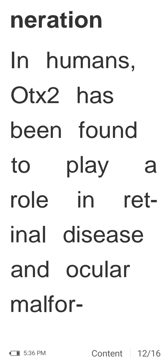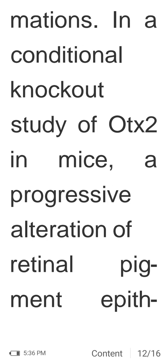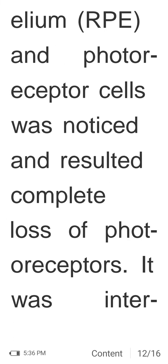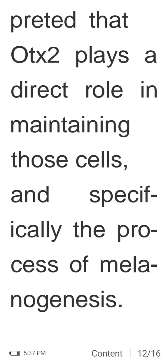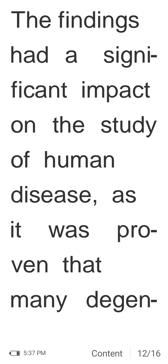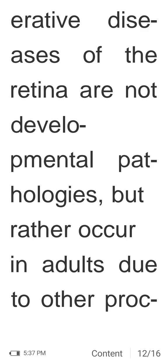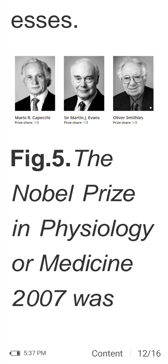OTX2 has been found to play a role in retinal diseases and ocular malformations. In a conditional knockout study of OTX2 in mice, a progressive alteration of retinal pigment epithelium (RPE) and photoreceptor cells was noticed, resulting in complete loss of photoreceptors. It was interpreted that OTX2 plays a direct role in maintaining those cells and specifically the process of melanogenesis. These findings had significant impact on the study of human diseases, proving that many degenerative diseases of the retina are not developmental pathologies but occur in adults due to other processes.